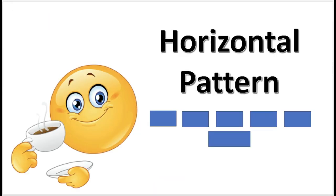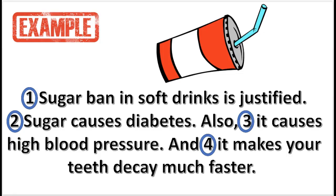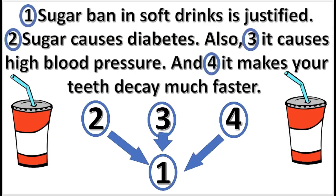Next is the horizontal pattern. The horizontal pattern is when two or more premises independently imply a conclusion. The diagram asserts that statements 2, 3, and 4 independently support statement 1.